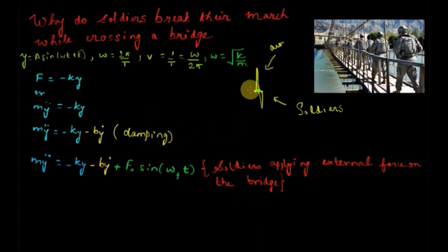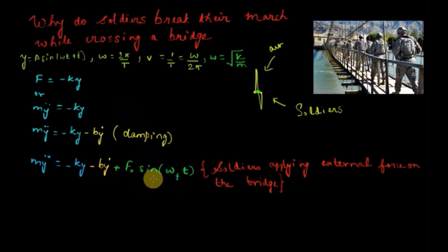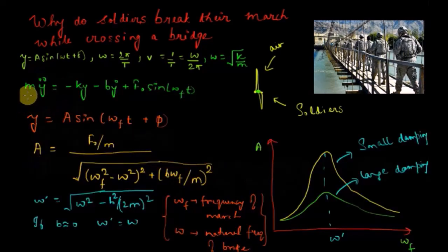Besides air resistance, the particle can also be under the influence of an external force affecting its oscillation. For example, when soldiers march on a bridge they march in a rhythmic pattern, applying a force on the bridge that itself changes periodically with time. Factoring in this external force, we further modify our equation by adding the term f₀ sin(ωft), where sin(ωft) represents the periodic nature of the soldiers' march and ωf represents the frequency of their march. This gives us the final equation accounting for both damping and the external force.